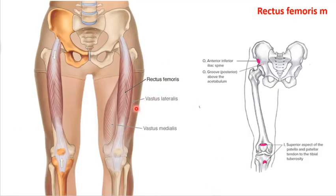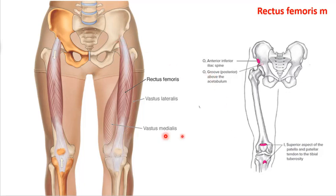The rectus femoris is a biarticulate muscle — a hip flexor and knee extensor — and is one of the four quadricep muscles along with vastus medialis, vastus lateralis, and vastus intermedius underneath. It's the most superficial. It attaches to the AIIS and into the groove of the acetabulum, making it a solid direct hip flexor. It does primarily hip flexion and knee extension.